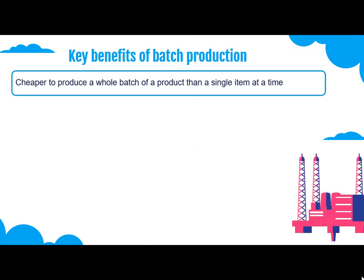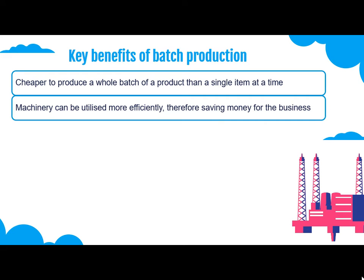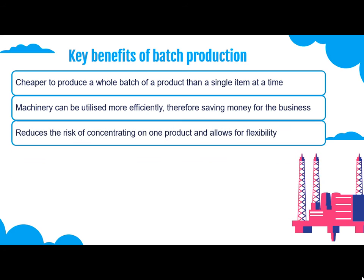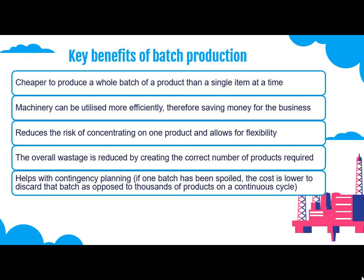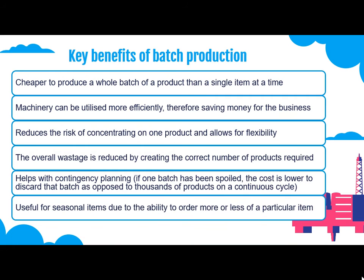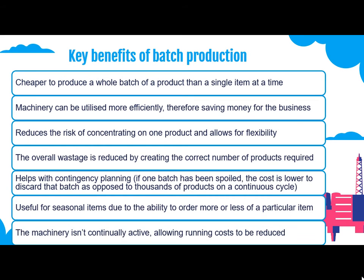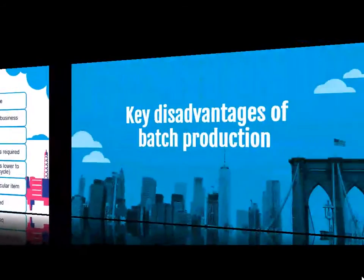Continuing with key benefits: it is cheaper to produce a whole batch of a product than a single item at a time. Machinery can be utilized more efficiently, saving money for the business. It reduces the risk of concentrating on one product and allows for flexibility. Overall wastage is reduced by creating the correct number of products required. It helps with contingency planning — if one batch is spoiled, the cost to discard it is lower compared to thousands of products on a continuous cycle. It is useful for seasonal items due to the ability to order more or less of a particular item, and machinery isn't continually running, allowing running costs to be reduced.